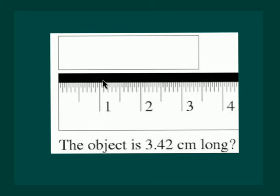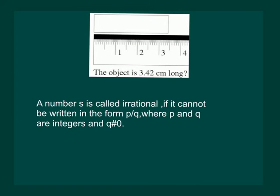And those numbers are called irrational numbers. Hence, for now we define that a number is called irrational if it cannot be written in the form p/q, where p and q are integers and q is not equal to zero.